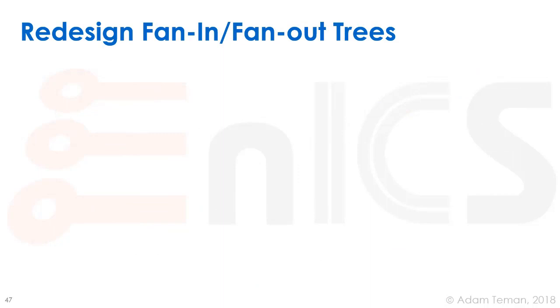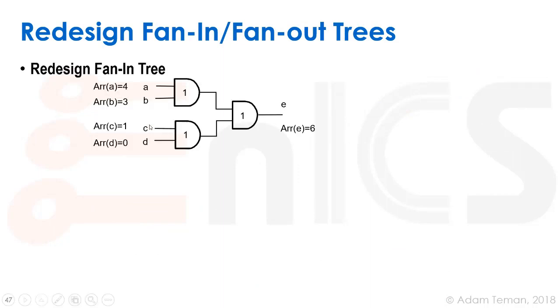Those are the basic three ways of doing timing optimization, but there are many more. For example, we can redesign the fan-in and fan-out trees. Let's see what redesigning the fan entry is. Here our timer sees that these four signals arrived at different times - this one took the longest at time four, and this one arrived immediately at time zero. If we look at this, our worst case path is through here, so we went through and it took us exactly six. We arrived at e after six.